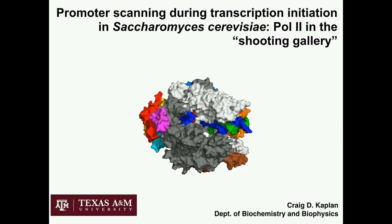I'm very pleased to be here today. My thanks to the organizers for allowing me to present our work, and for their attempts to ice me before this talk with abuse from a certain University of Pittsburgh faculty member. Today I'm going to tell you about our studies on RNA polymerase II in transcription initiation. The title of my talk is Pol2 in the Shooting Gallery.